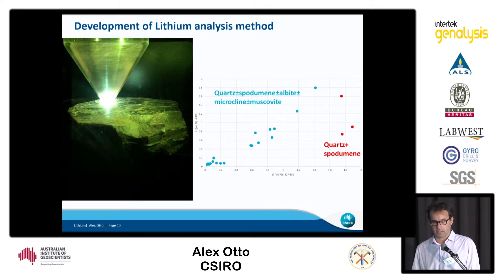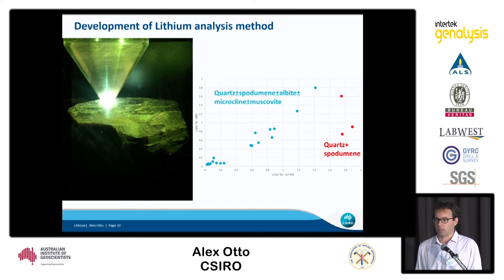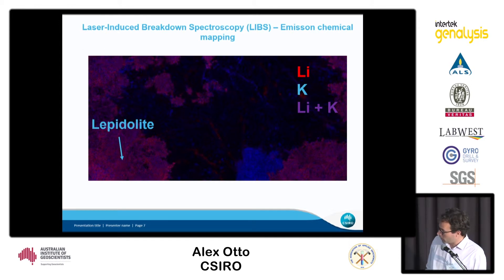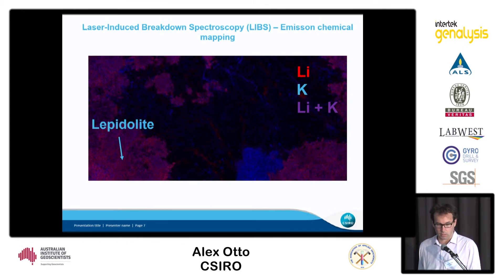Interestingly, LIBS can also be used in an imaging sense, and there's an example here. As you can clearly see, you can map the lepidolite — lithium, potassium, some K-feldspar — with the dark color in the middle being quartz in this instance.